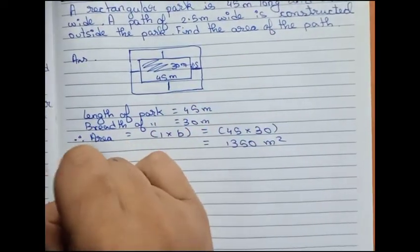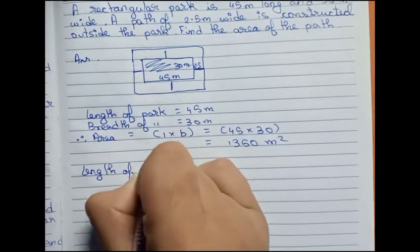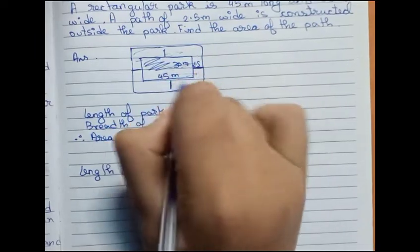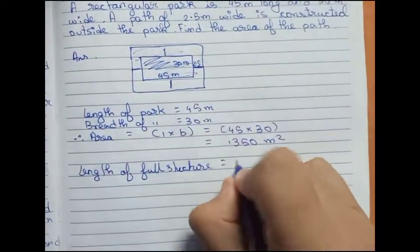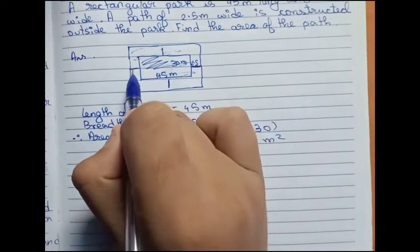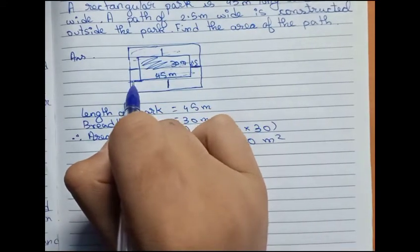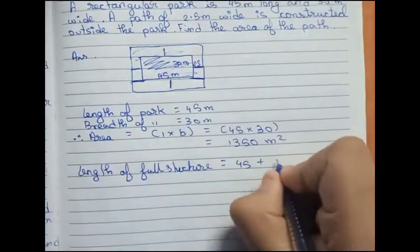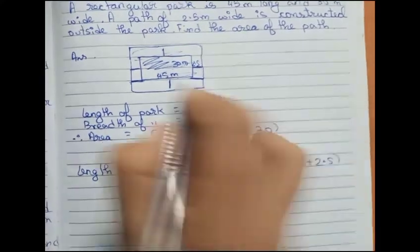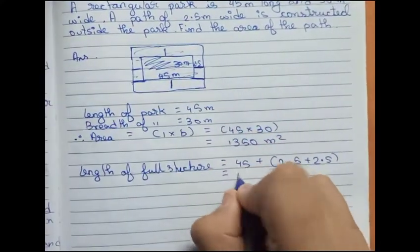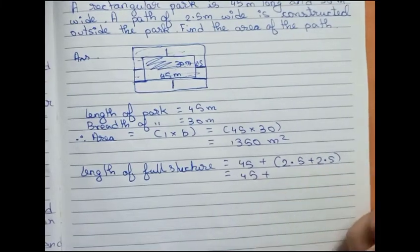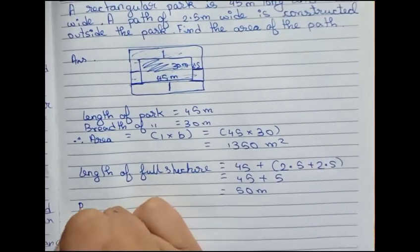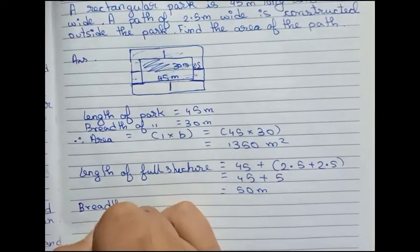Now we find the length of the full structure — that means the full rectangle including the path. The park length is 45 meters, and we have to add 2.5 on each side, so it becomes 45 plus 2.5 plus 2.5, which equals 45 plus 5, which equals 50 meters.